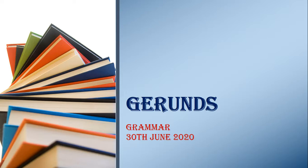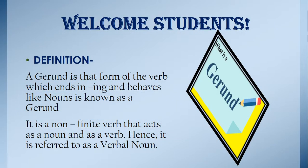Now children, what would you understand by gerunds? A gerund is that form of the verb which ends in -ing and behaves like a noun, and hence it's called a gerund. It is also a non-finite verb that acts as a noun and as a verb. We have already covered finites and non-finites, so it's also referred to as a verbal noun.